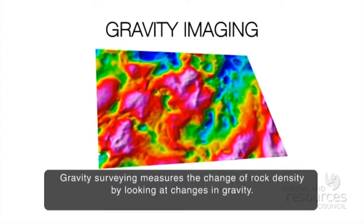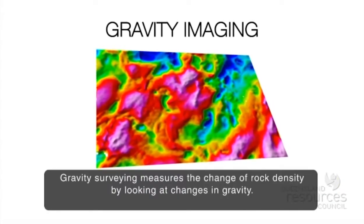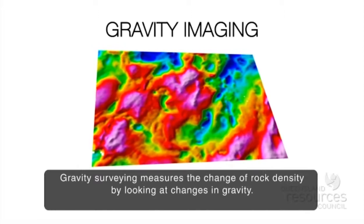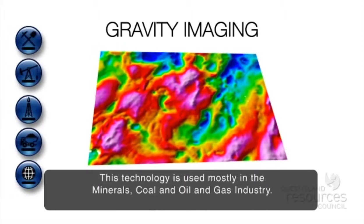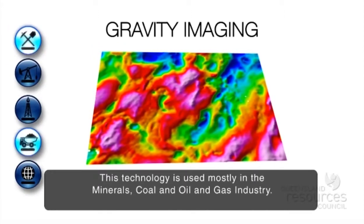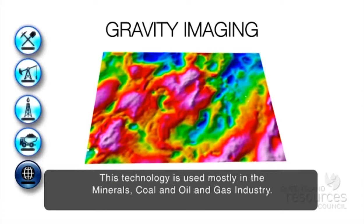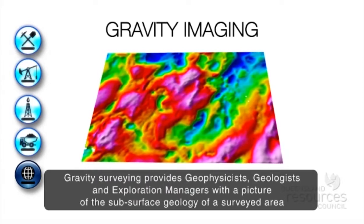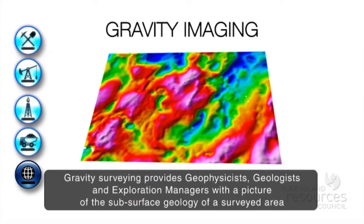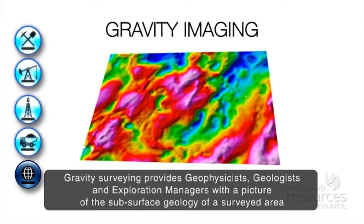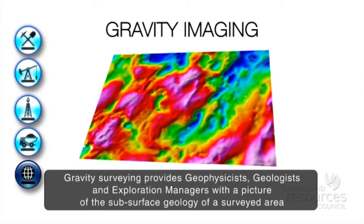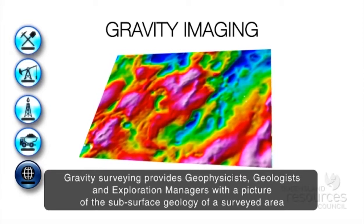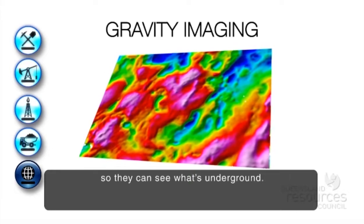Gravity surveying measures the change of rock density by looking at changes in gravity. This technology is used mostly in the minerals, coal and oil and gas industry. Gravity surveying provides geophysicists, geologists and exploration managers with a picture of the subsurface geology of a surveyed area, so they can see what's underground.